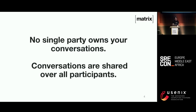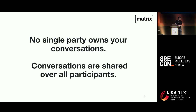The founding principles of Matrix are that it is decentralized — no single party should ever have control of your conversations. Conversations therefore get replicated over all participants. This is a fundamental shift from centralized services like Slack or Teams, or centralized standards-based approaches like XMPP, or any kind of single chat server that mediates the conversation. Matrix is very similar to Git, but for communication.